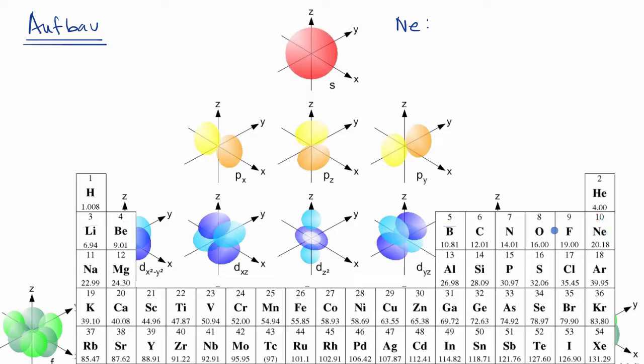The first two will fill that first shell, so we have 1s², and then the next two are going to fill the 2s subshell in your second shell, so then you're going to have 2s², and then we have six more electrons to get to 10, and that's now going to fill your 2p subshell, so 2p⁶.